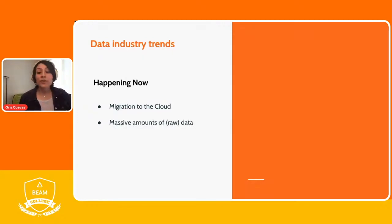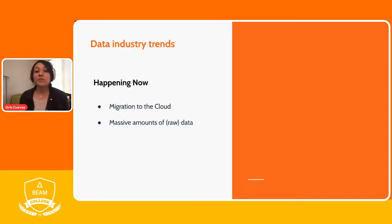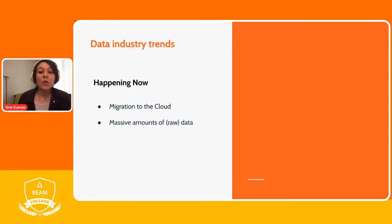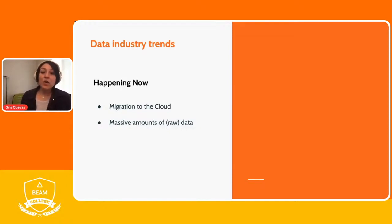A second trend is that we are gaining access to massive amounts of raw data. More users online are doing more things — from shopping to consuming entertainment — and this is creating a gold mine of data. This enables companies to store data mostly in a raw stage, but even when this is great, new challenges derive from it: what are you going to do with all this data?